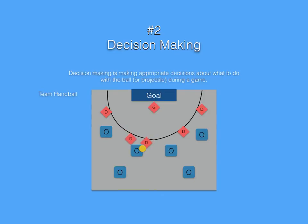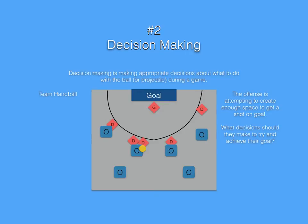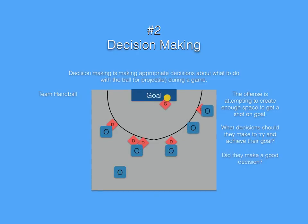Notice they make a pass. Defenders converge. Would it be a good decision to shoot right now? I better guard these open players. The offense is attempting to create enough space to get a shot on goal. What decisions should they try to make to achieve their goal? Did they make a good decision?